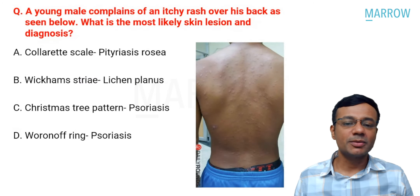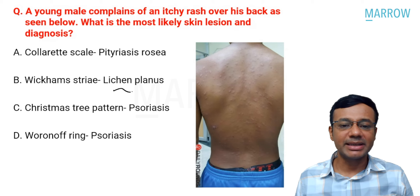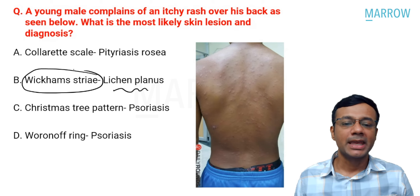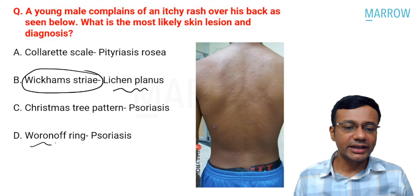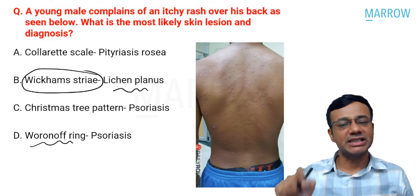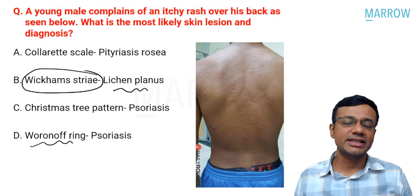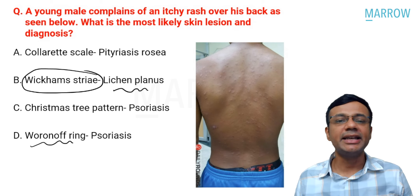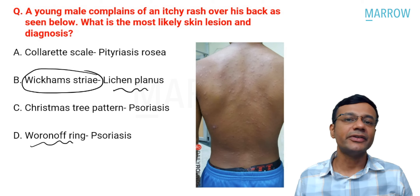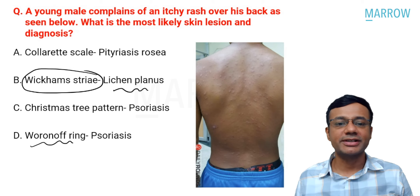Among the remaining options: lichen planus is another papulosquamous disease associated with Wickham striae. Woronoff's ring is the hypopigmented rim seen around lesions in psoriasis, which is generally treated with topical steroids.